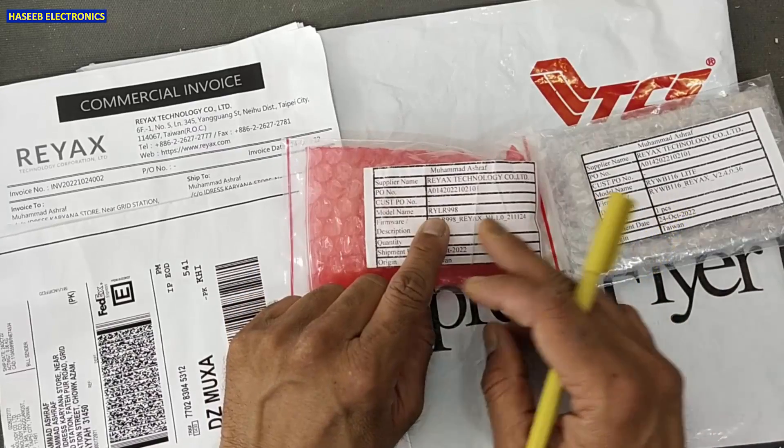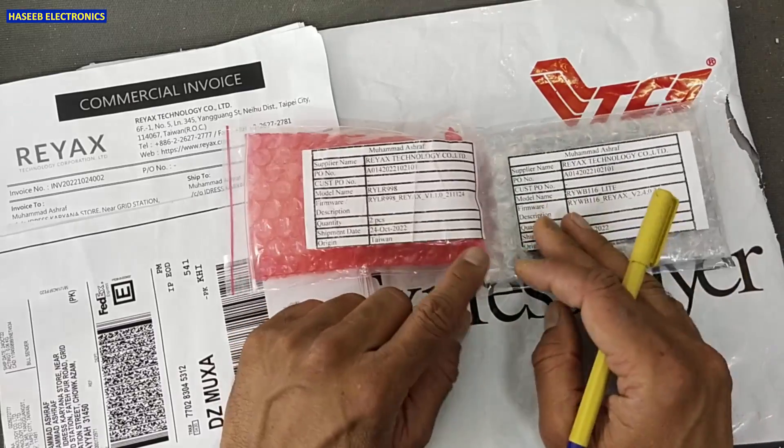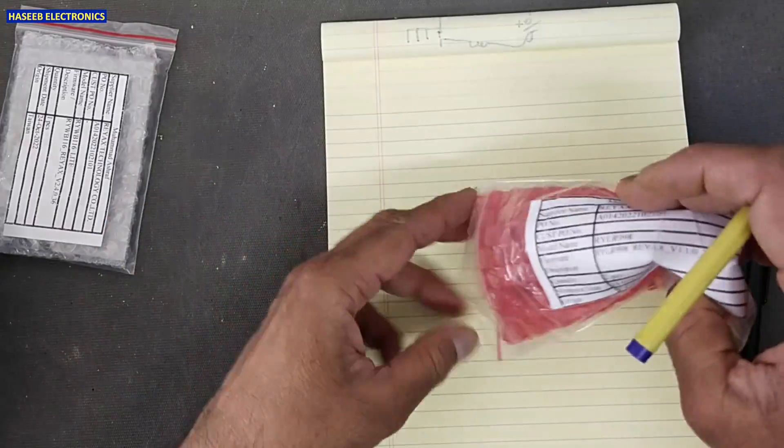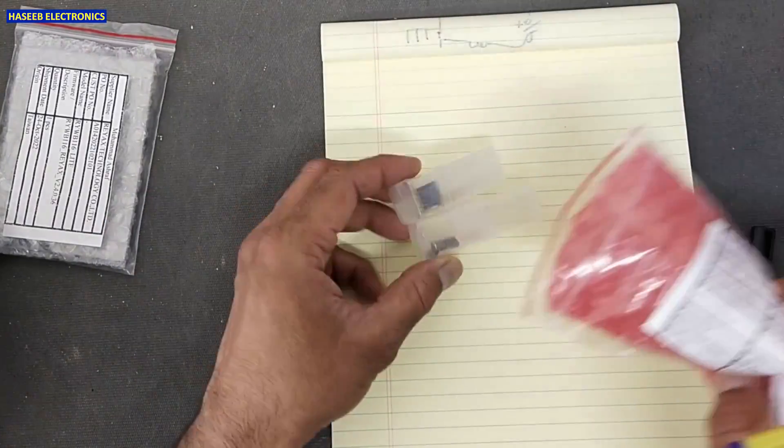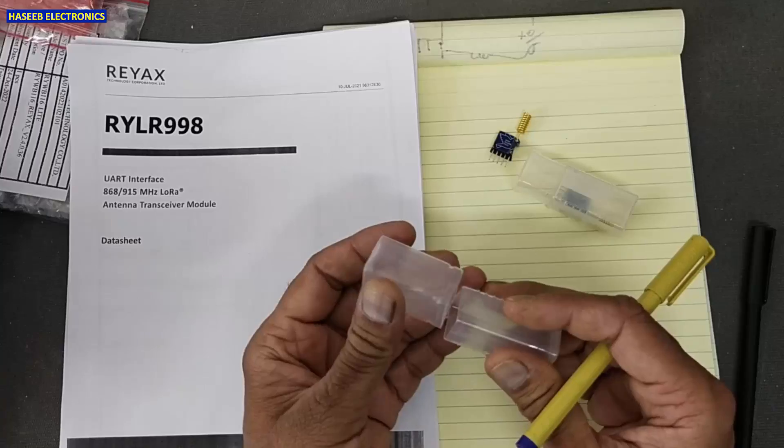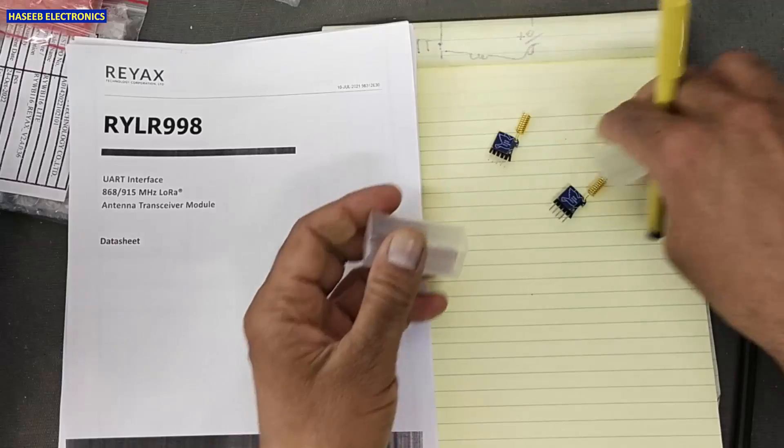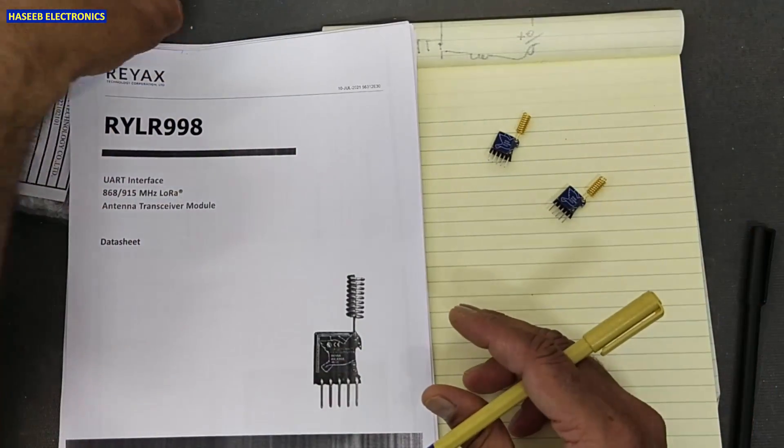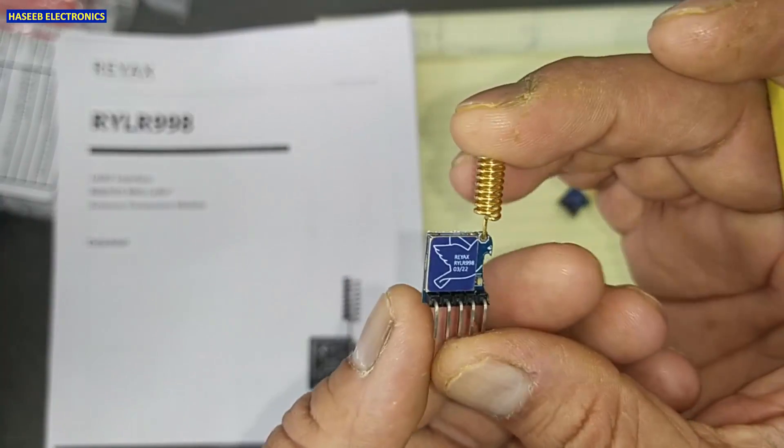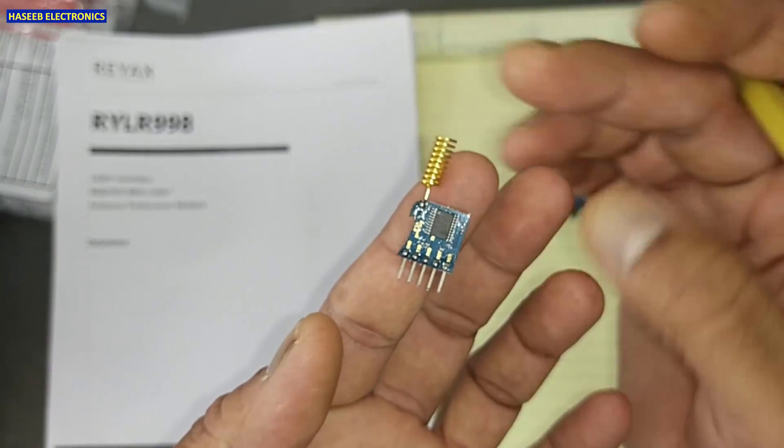These are RYLR998 transceiver modules and this is Wi-Fi module. Today we will check these modules. It is pair, these are two modules here. It is supplied in very good packing. If you check its size, very small transmitter and receiver module, very lightweight.